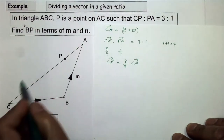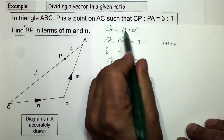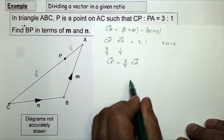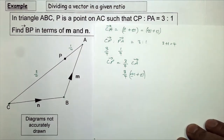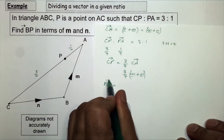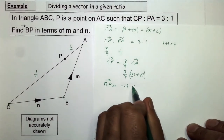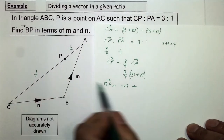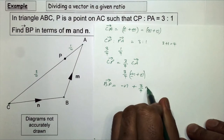From there, three quarters and one quarter of CA. We worked out CA already, which I can rewrite as m plus n. So CP equals three quarters of m plus n. Now going back to the question, BP equals B to C first — going in that direction — which is minus n, plus CP which is three quarters of m plus n.